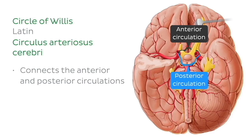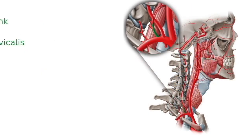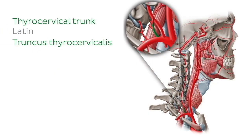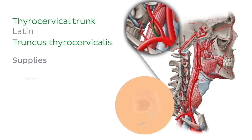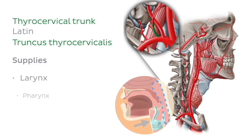Heading back to the subclavian artery, the next branch is the thyrocervical trunk. It has a relatively short course in the anterior portion of the neck and gives off several branches. That's why this arterial trunk has a wide supply territory, including the thyroid and parathyroid glands, larynx and pharynx.